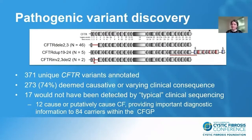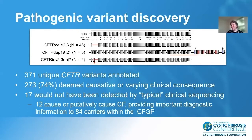In total, we identified 371 unique CFTR variants, and we annotated all of them. About three quarters were deemed causal or having varying clinical consequence using the CFTR2 or ACMG criteria. Among these, 17 would not have been detected by a typical clinical sequencing protocol, which usually focuses on sequencing the exons and just a little bit of the flanking regions. Among these, 12 were causal or thought to cause CF, providing important diagnostic information for 84 carriers within the CFGP.